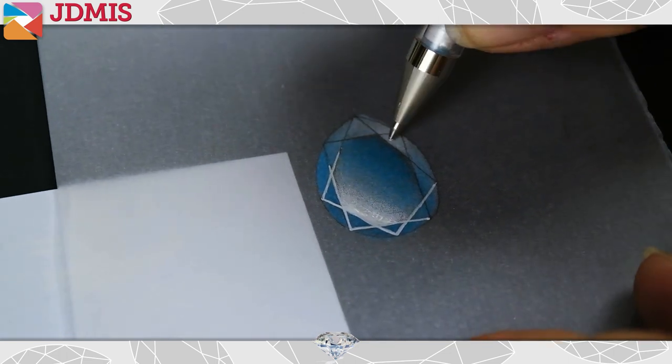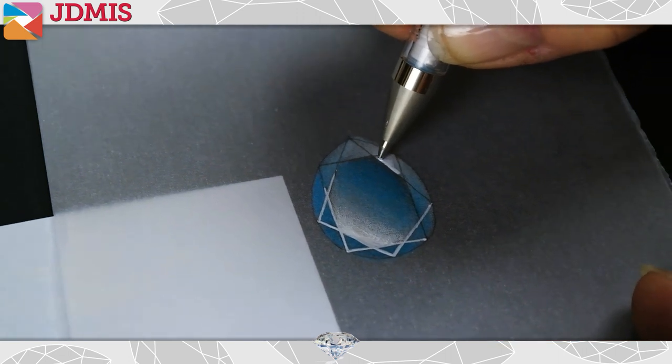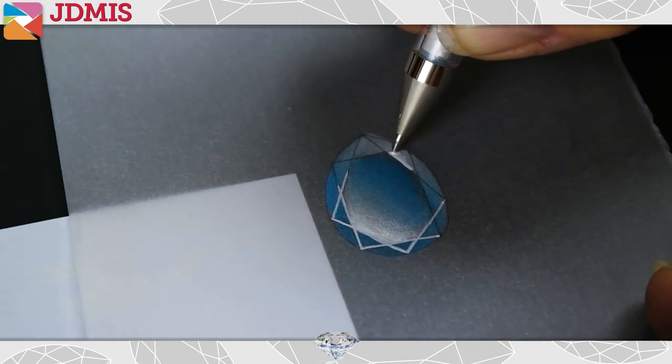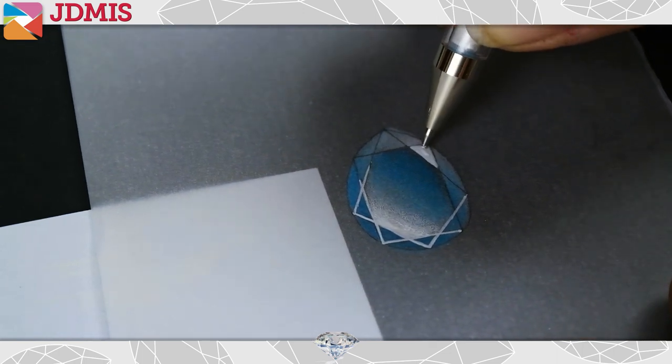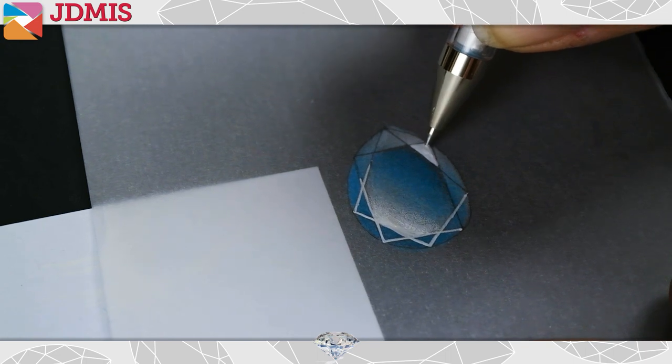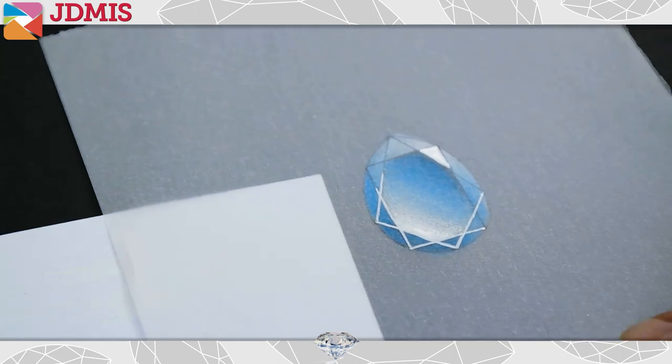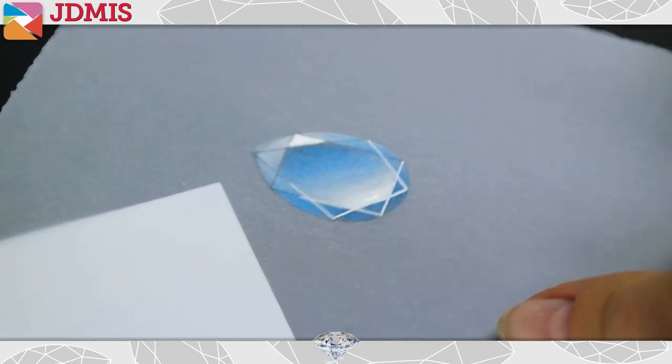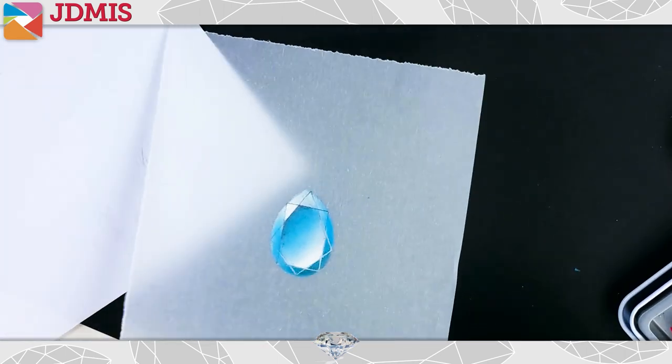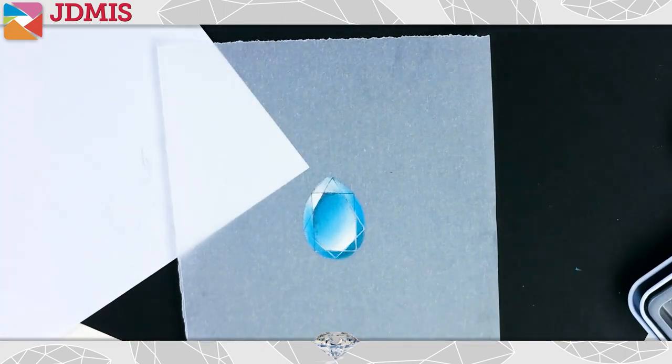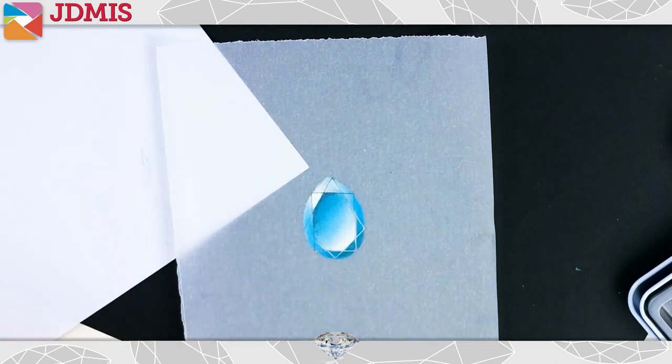Here's another little trick. Putting some white ink on the one facet that really faces the light is going to make that particular facet stand out and look as if the light is striking it directly. We have to leave those to dry before we flip the paper over. Here, you can now see how the light really strikes that facet and how the light comes through the stone and back out of the table.